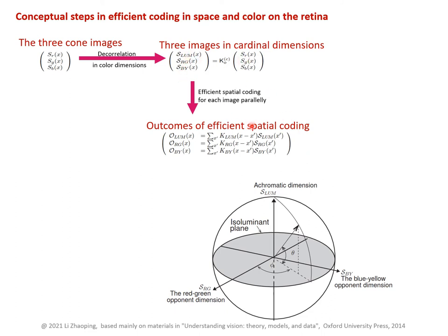The encoding receptive fields for the luminance image, which usually has a higher signal-to-noise ratio, look like centre-surround bandpass filters in order to enhance contrast. In the other two chromatic images, they are usually having a lower signal-to-noise ratio, so their spatial coding filter is lower-pass in order to smooth out noise.